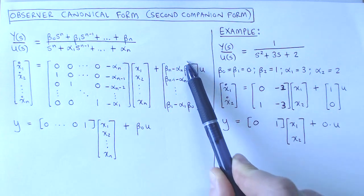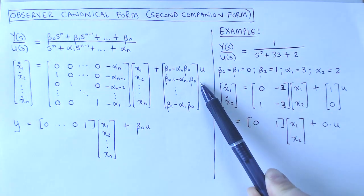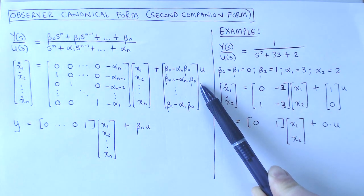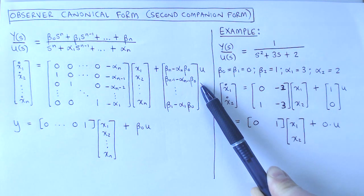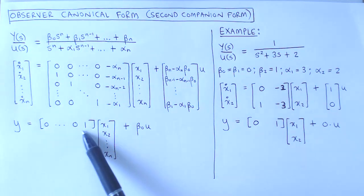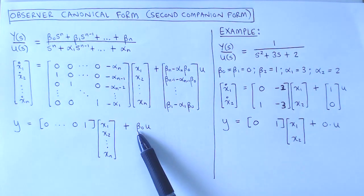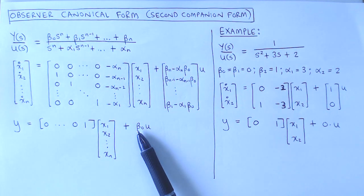The B vector is the transpose of the C vector in the control canonical form, and the C vector is the transpose of the B vector in the control canonical form. The scalar D is the same as that of the control canonical form.